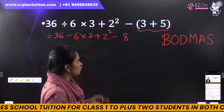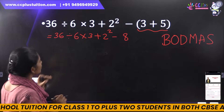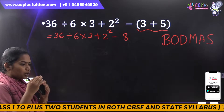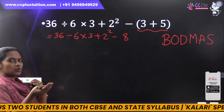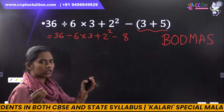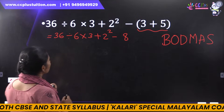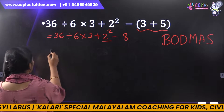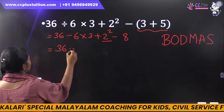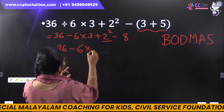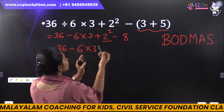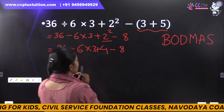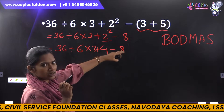Next, we have brackets. Do you have brackets here? No. Next, we have order. We have two squared, three squared — we have squares and square root. This is all orders. Now, we have two squared. Let's solve it. 36 divided by 6 into 3. Two squared? 4. Plus 4 minus 8. We have orders. No.